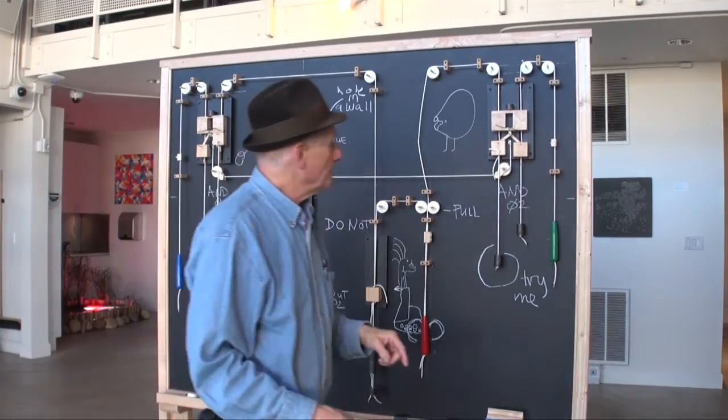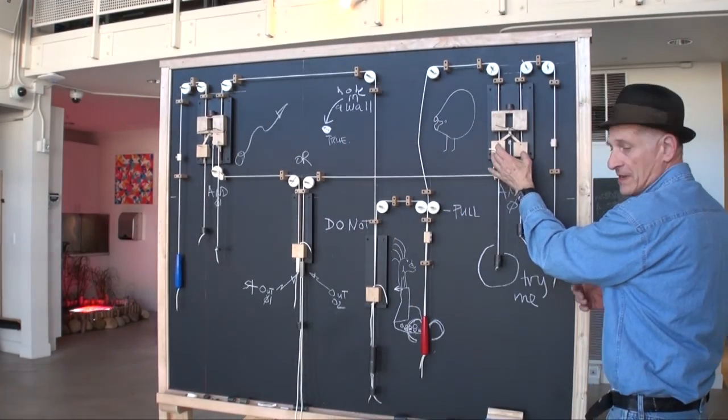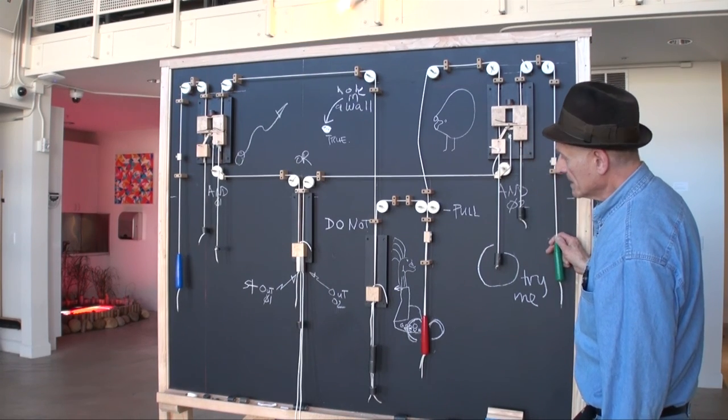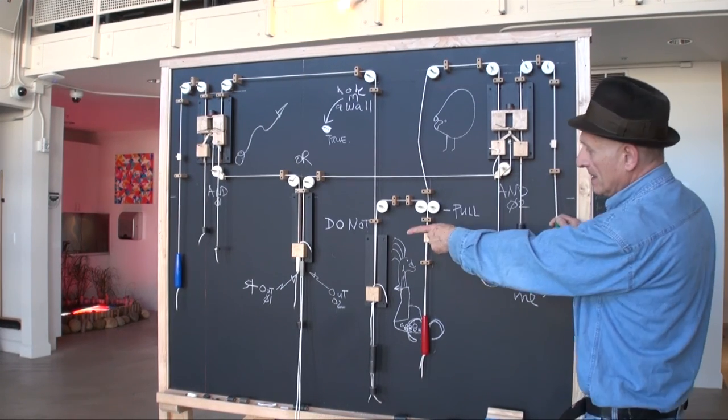This AND gate has neither of the inputs primed. So, if I pull this, you don't get much happening at the OR.